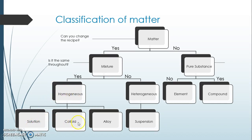Homogeneous mixtures can be broken down into three types: solution, colloid, or alloy. A solution is a substance dissolved in something else — it can be solid in liquid, gas in liquid, or liquid in liquid. For it to be a solution, the dissolved particle size must be small enough that light shone through it won't scatter.